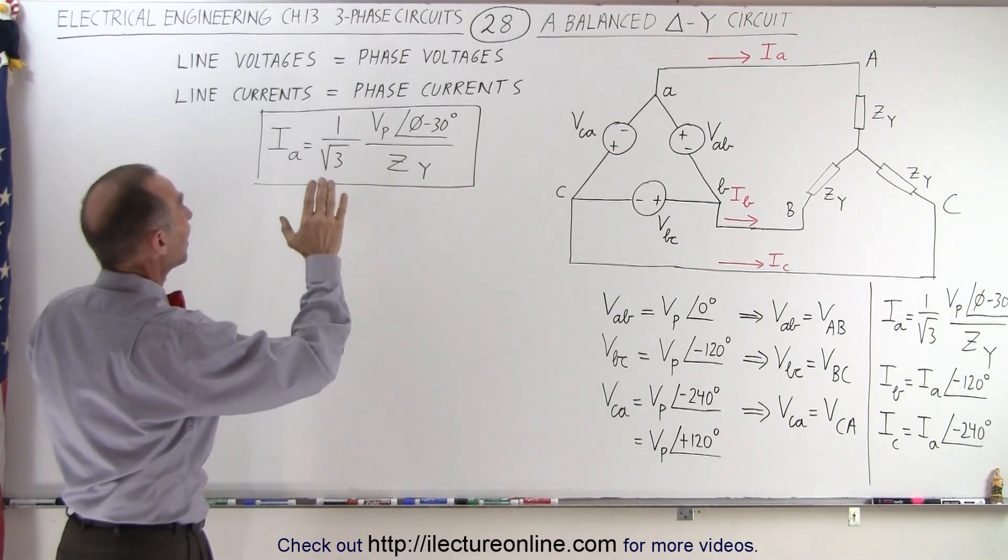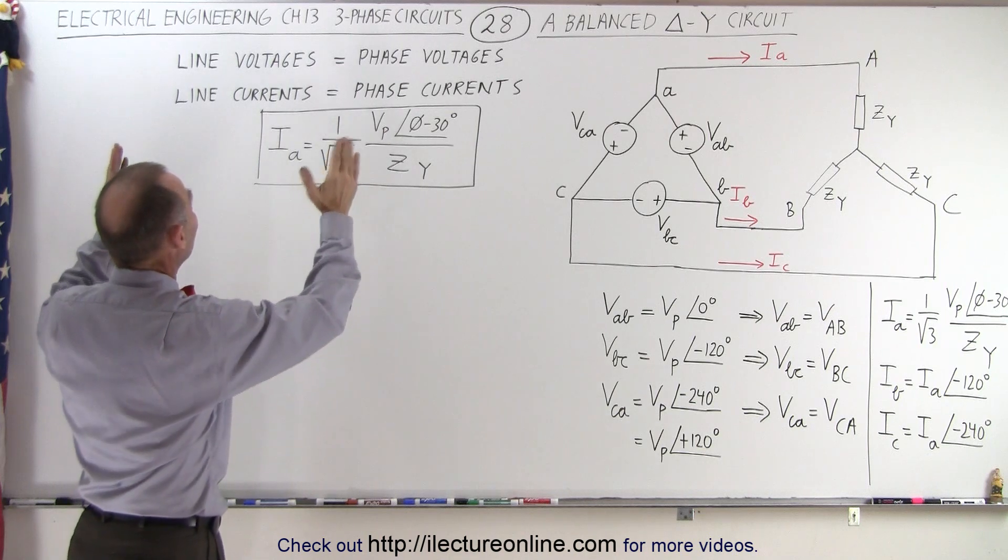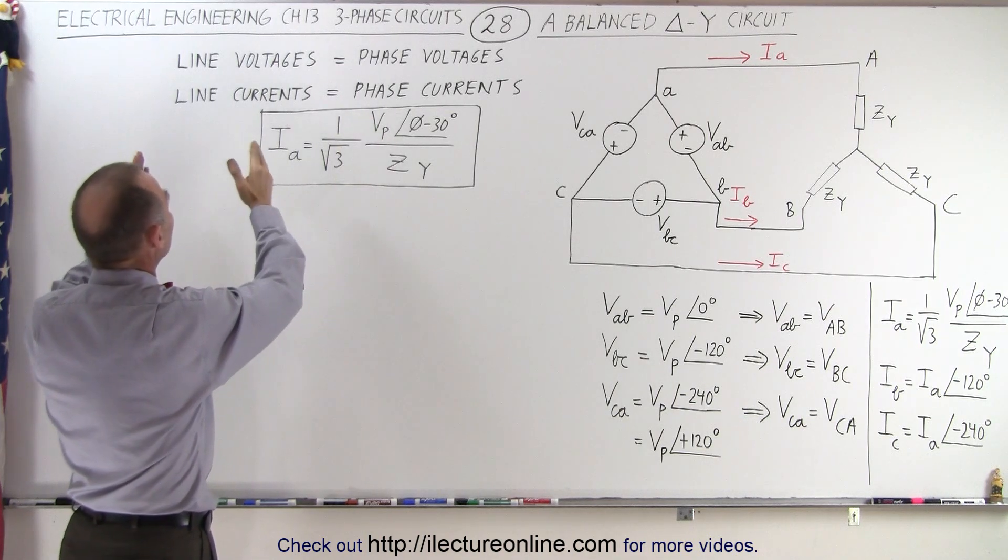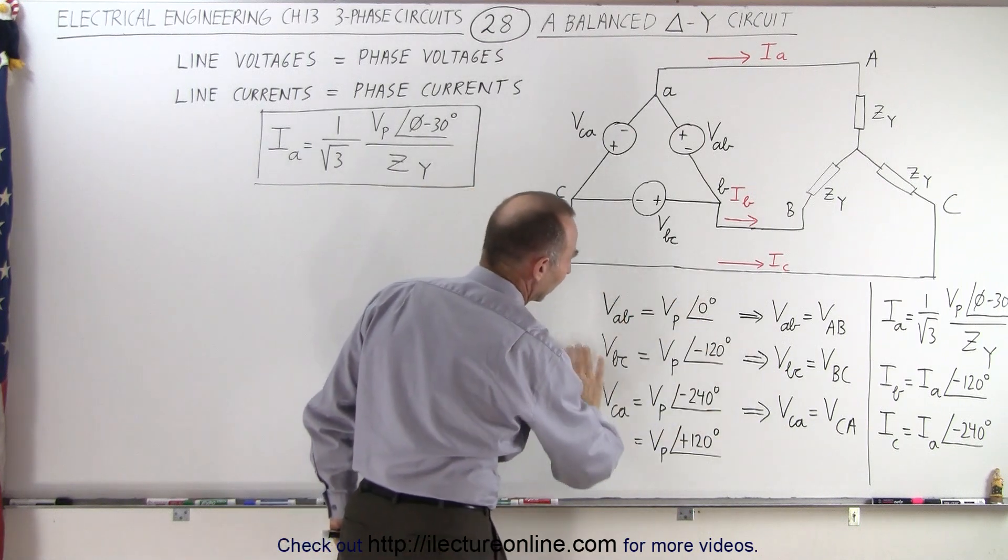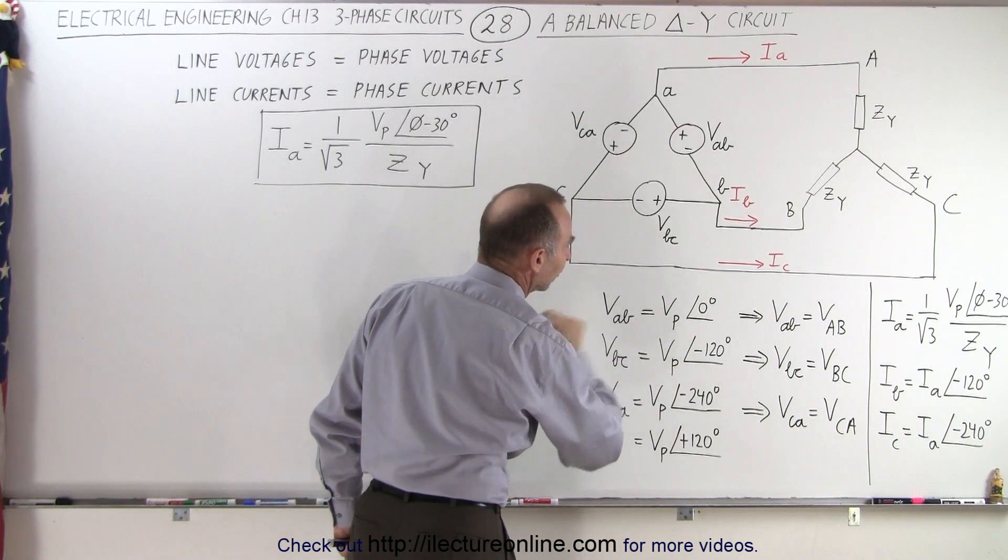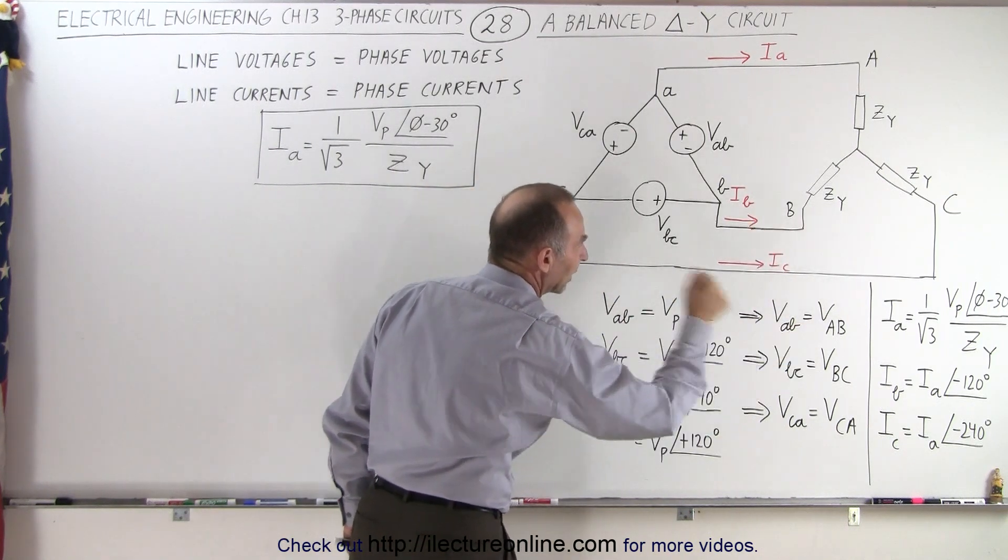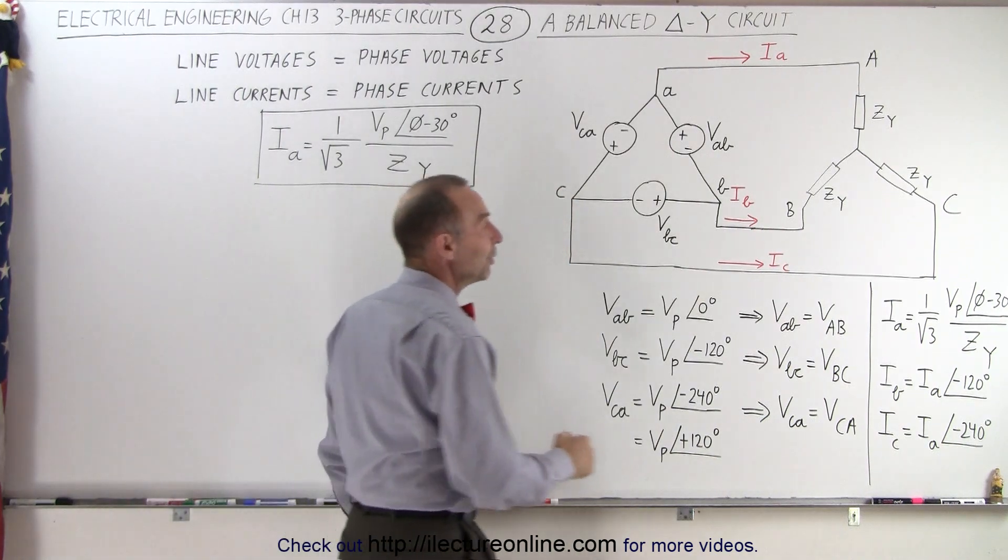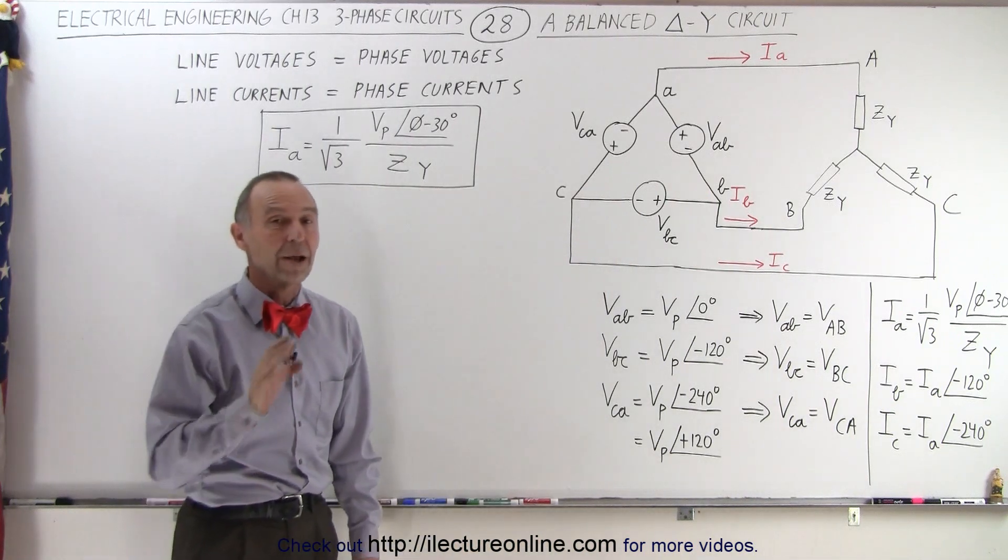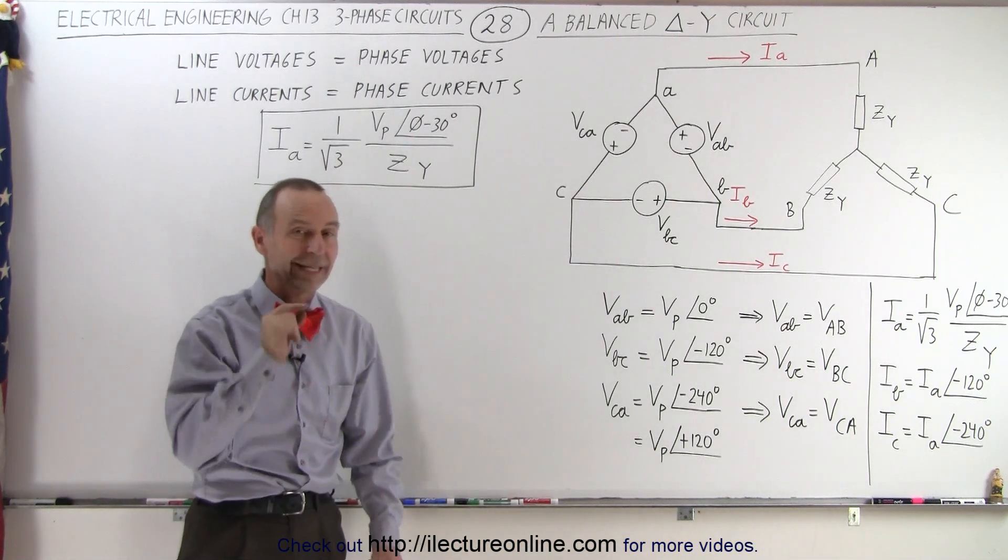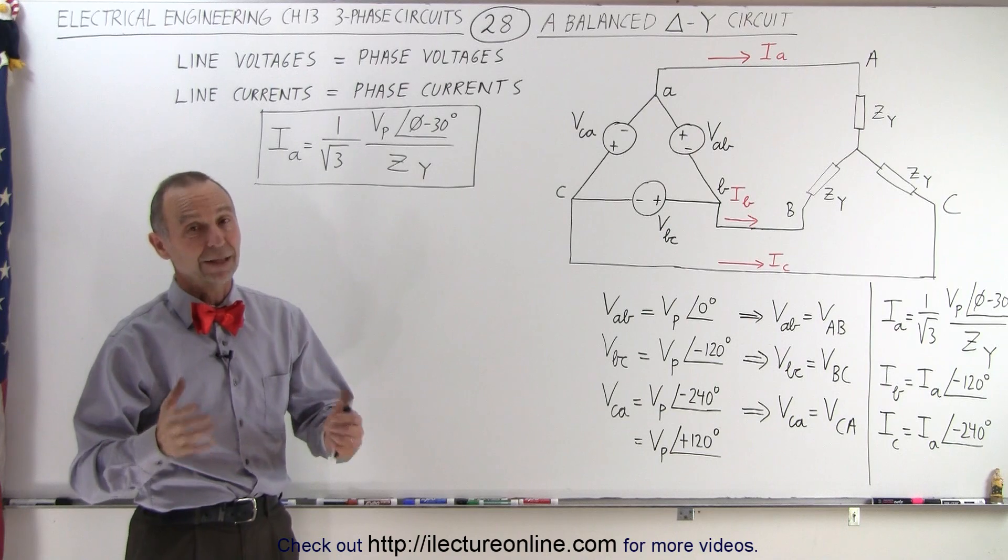But just keep in mind, in a delta-Y circuit, the line voltage equals the phase voltage and the line currents equal the phase currents. We can very easily see how the line voltages are equal to the phase voltages and then how to calculate the line currents if we know the phase voltage and the impedance. And now we're going to figure out why we came up with that equation in the next video. And that is how it's done.